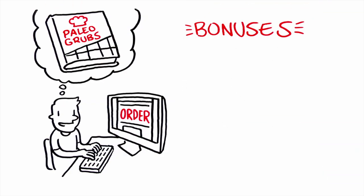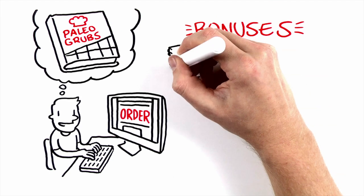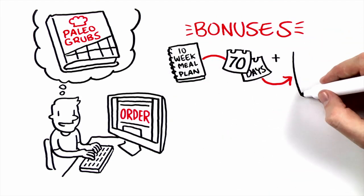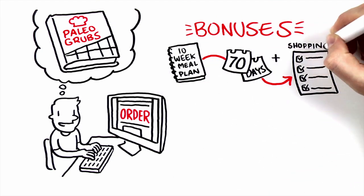If you get the Paleo Grubs book today, you'll also receive these free bonuses: a 10-week meal plan, that's 70 days of planned paleo meals, including shopping lists for each week.